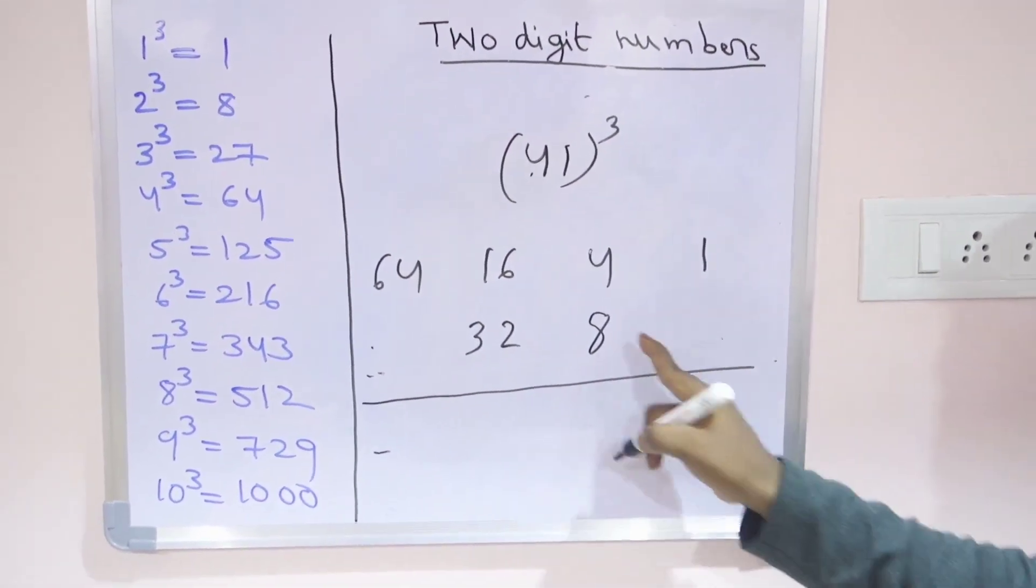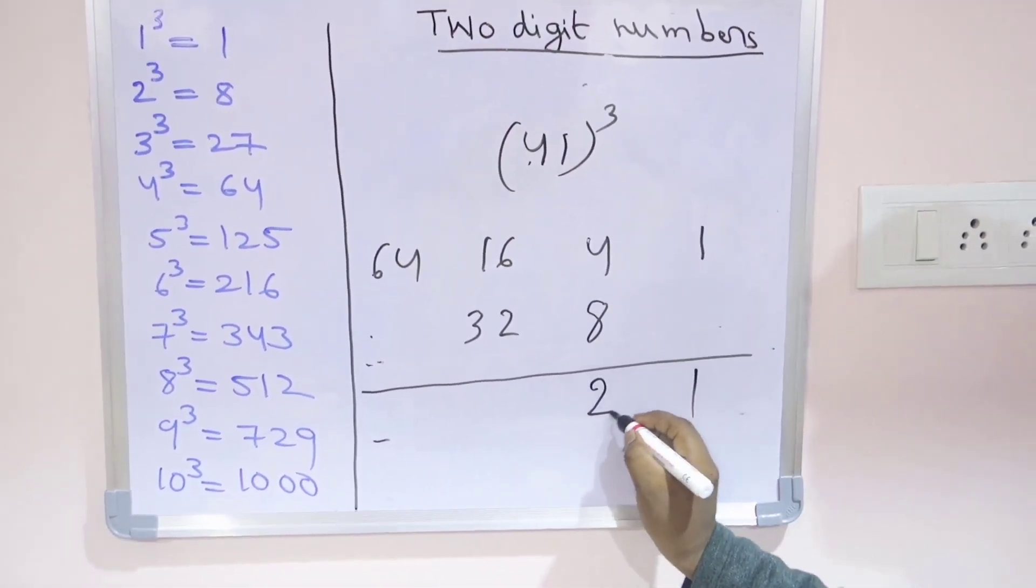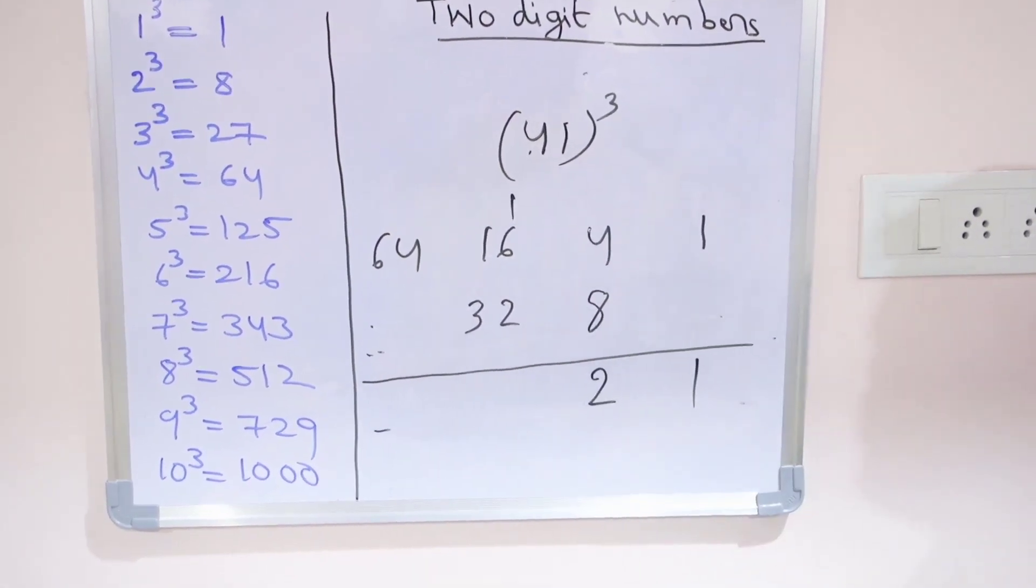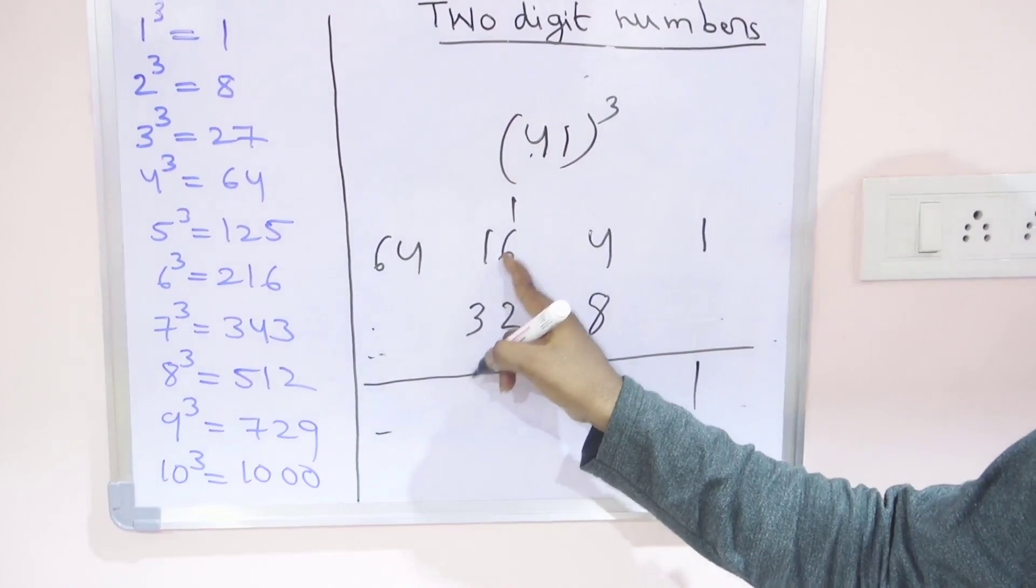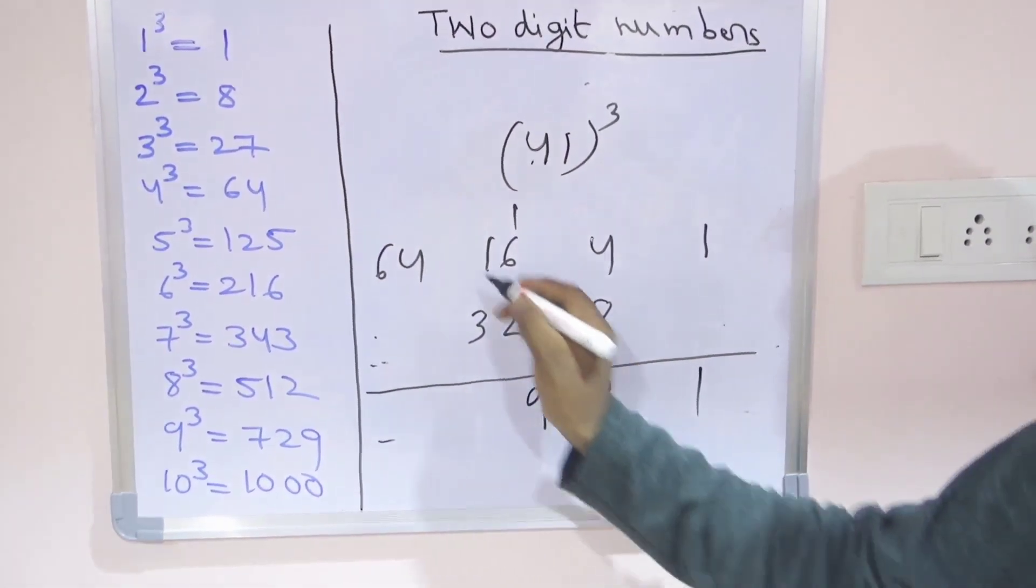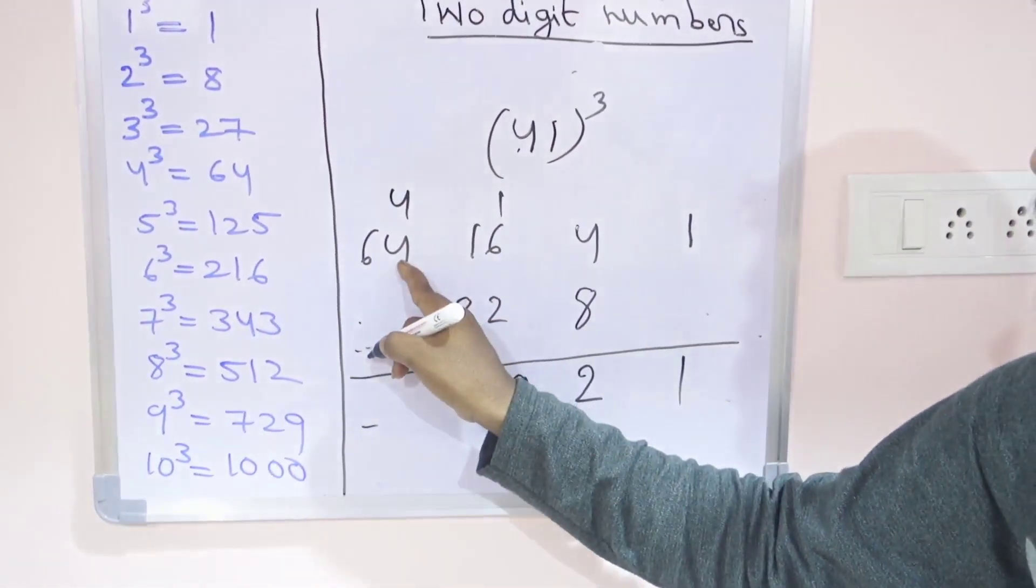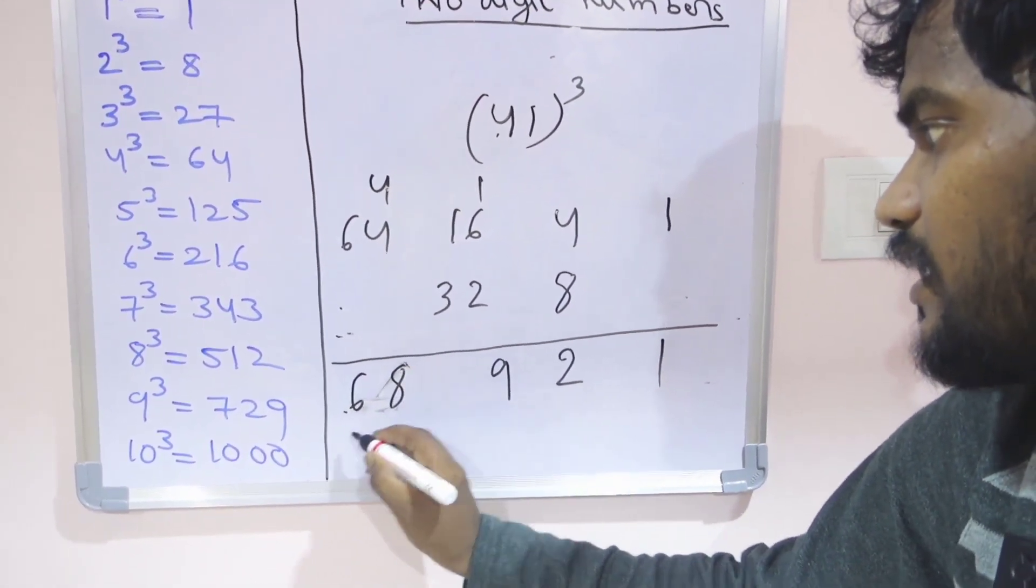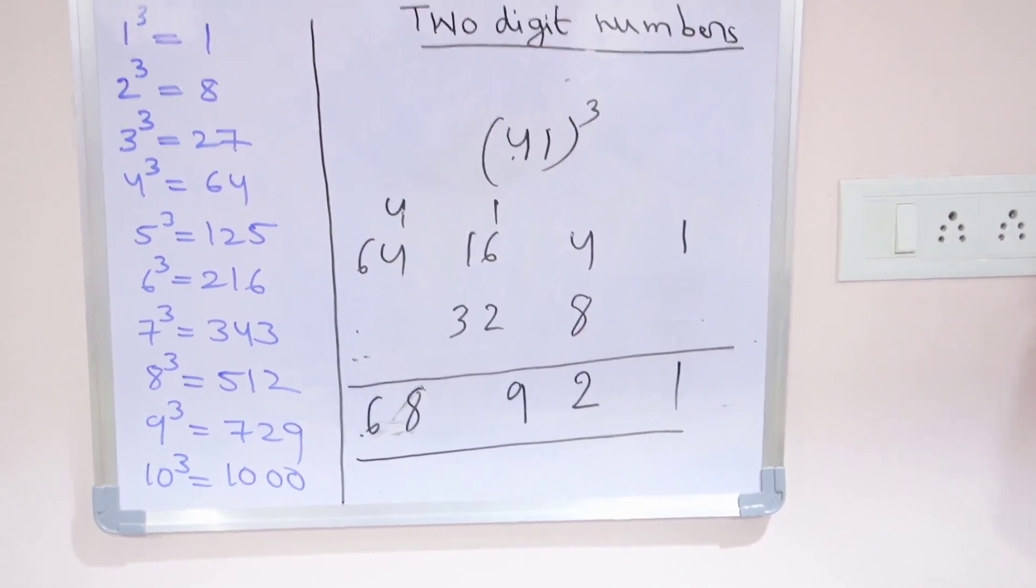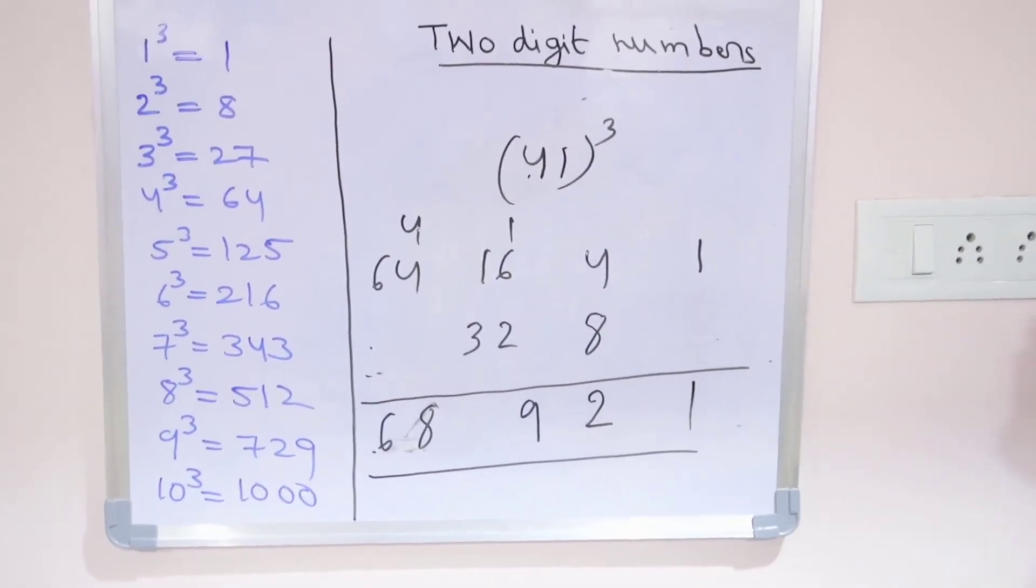1, 8 plus 4 is 12, write 2, carry 1. 32 plus 16 is 48, 48 plus 1 is 49. Write 9, carry 4. 64 plus 4 is 68. Then the answer is 68921, the cube of 41.